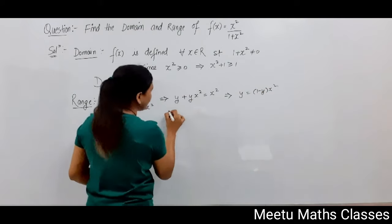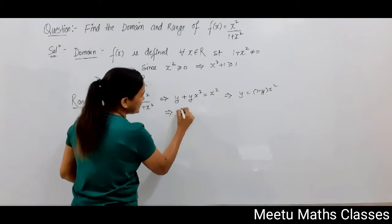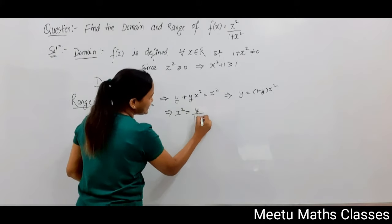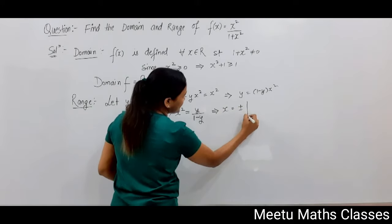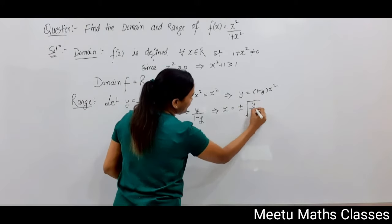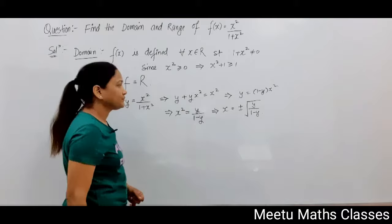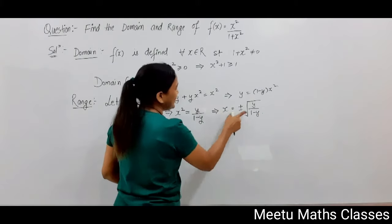Or we can write that x² = y / (1 - y), or x can be defined as ± √(y / (1 - y)). Now x as a function of y is defined.